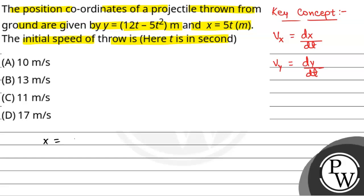We have been given x = 5t. So dx/dt will be equal to 5. And y is given as 12t - 5t². So dy/dt will be equal to 12 - 10t.